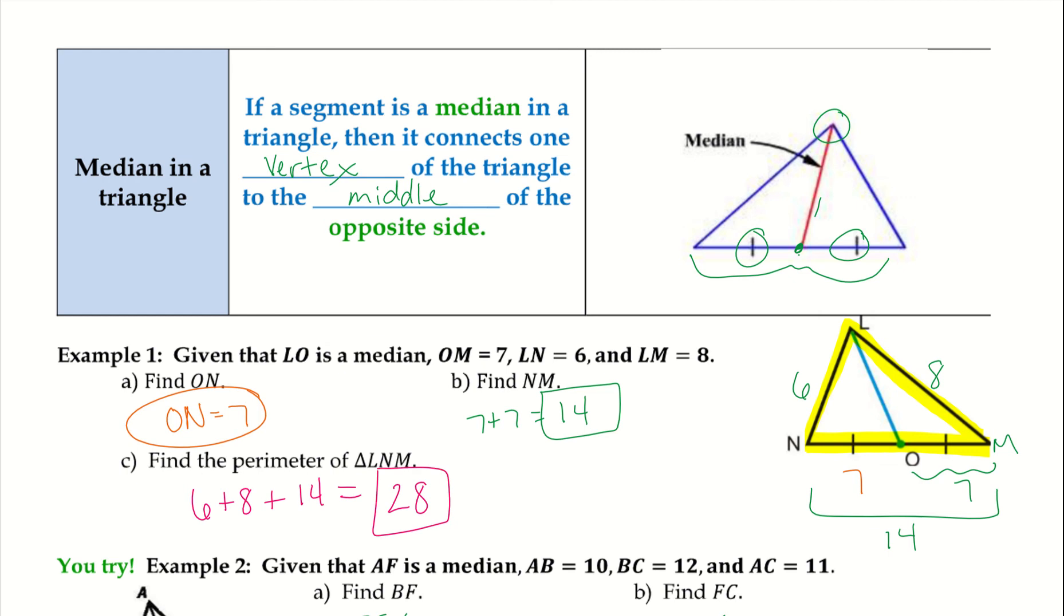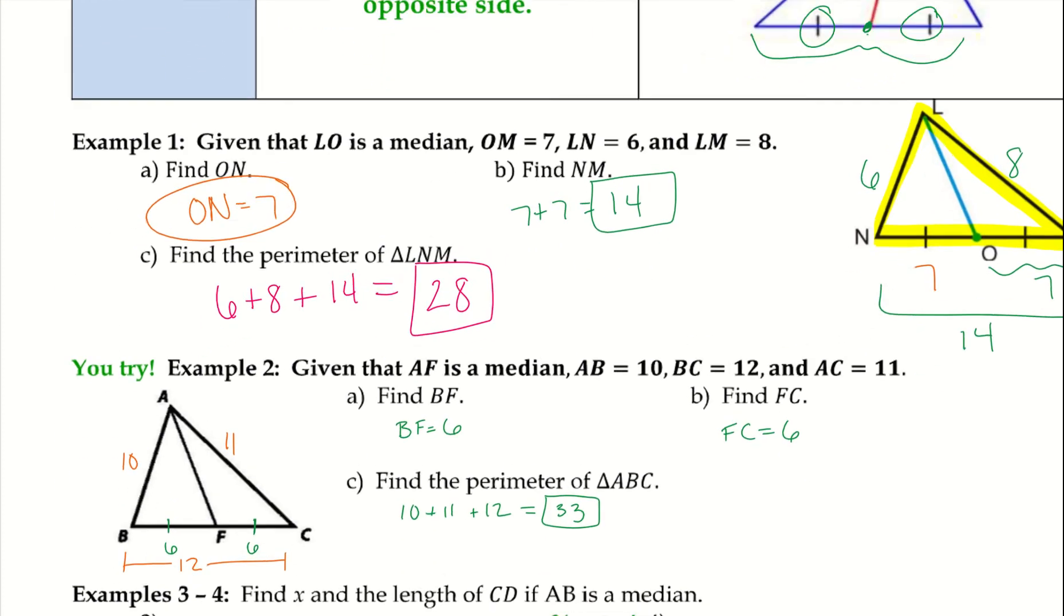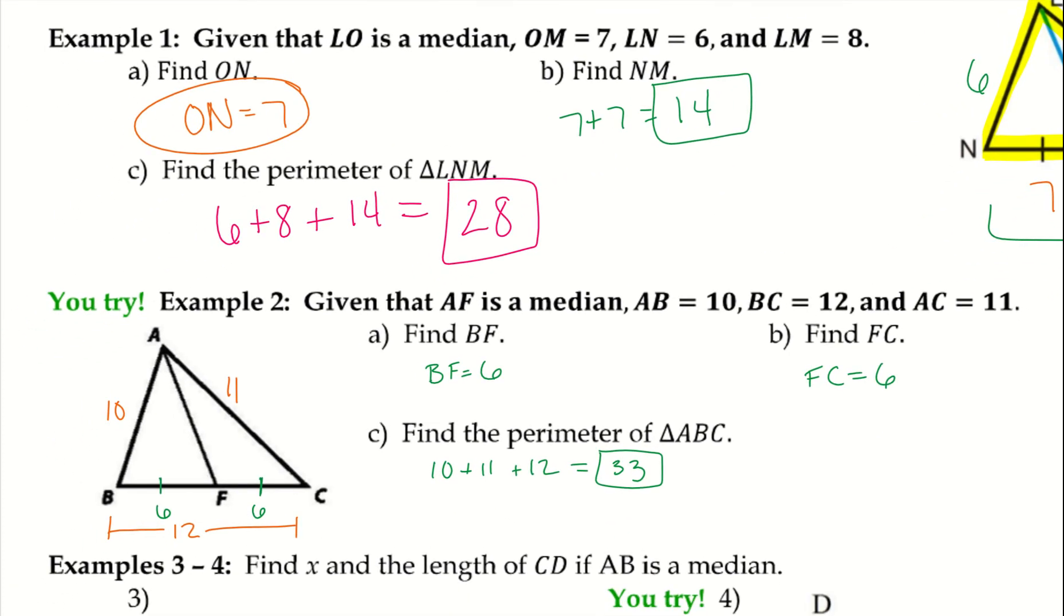Example number 2 is a you-try, so go ahead and take a second, pause the video and try example 2. Here is my work and answers for example 2. Down here what I was talking about earlier, it gave us that BC was 12 which was this entire side. Since I knew that I had this median here, I knew if I divided 12 in half I would get the two respective parts.